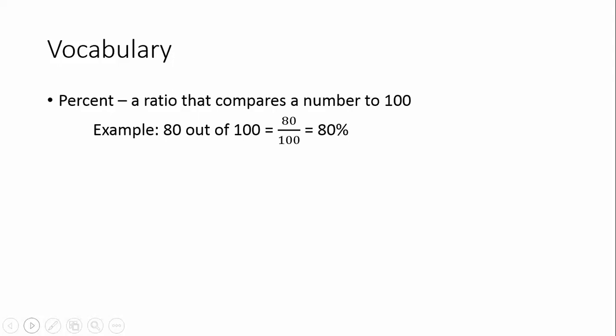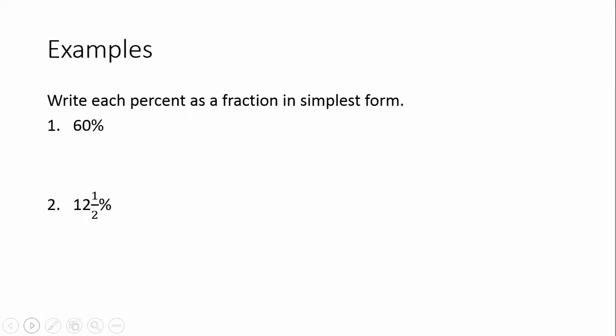And a lot of this will probably be review today, which is good. So let's write each percent as a fraction in simplest form. So we always want to make sure that we're reducing the fractions. So for number 1, we have 60 percent. Remember, it's out of 100. So we would write 60 over 100.